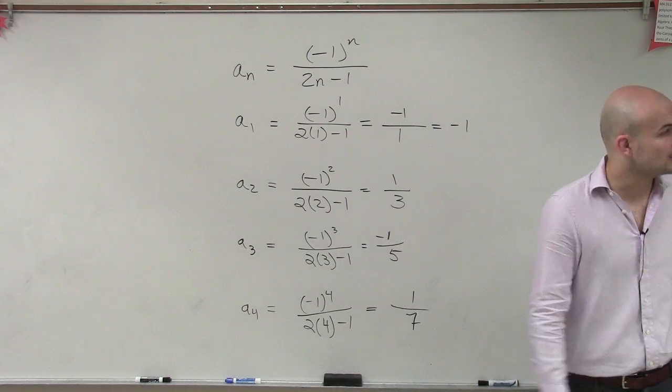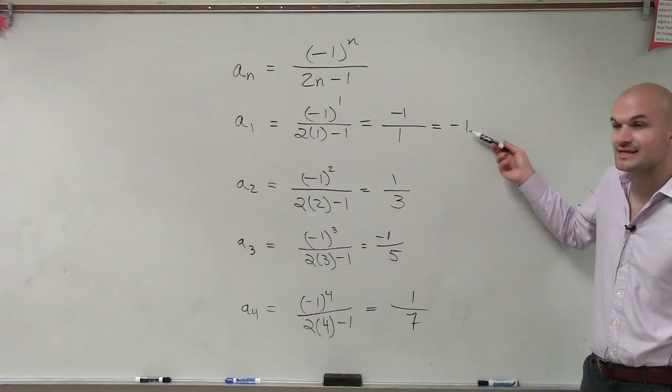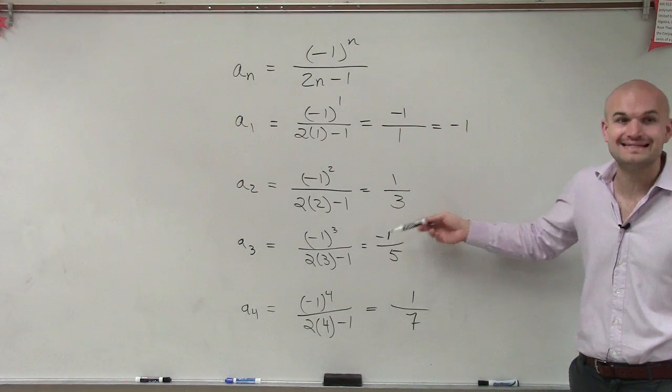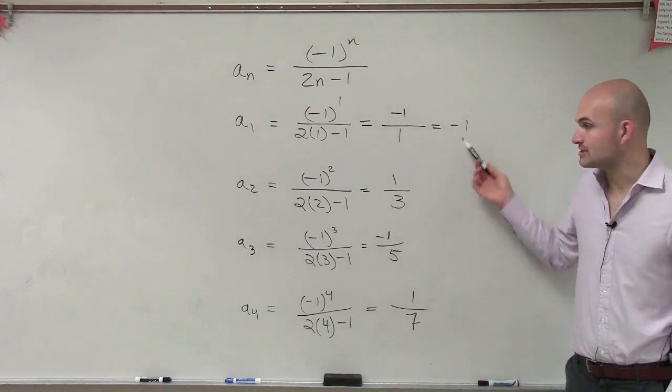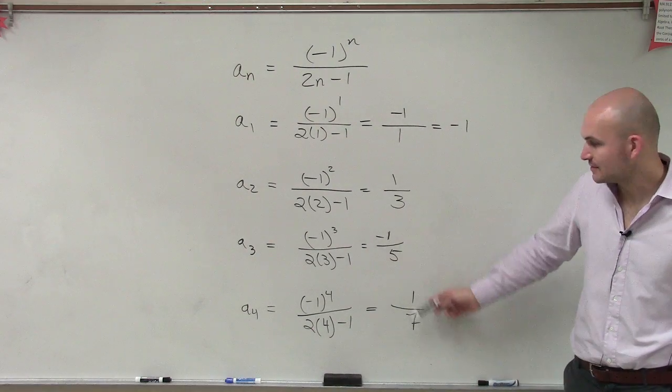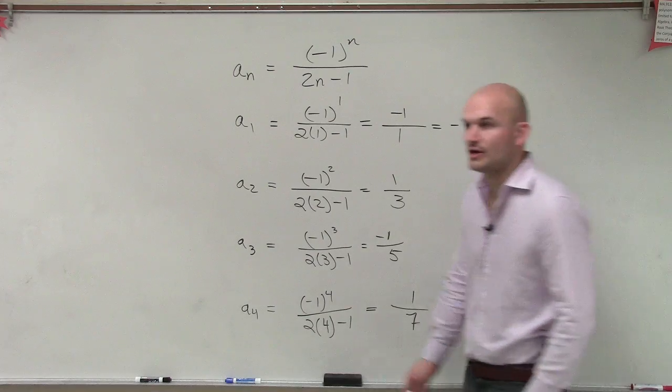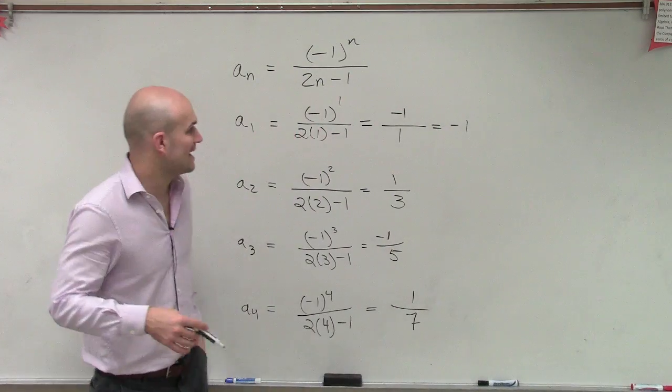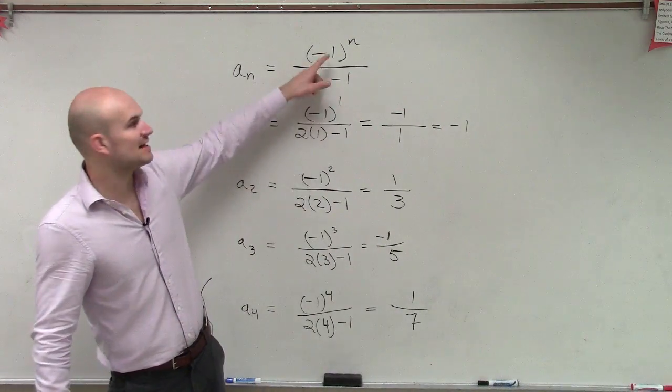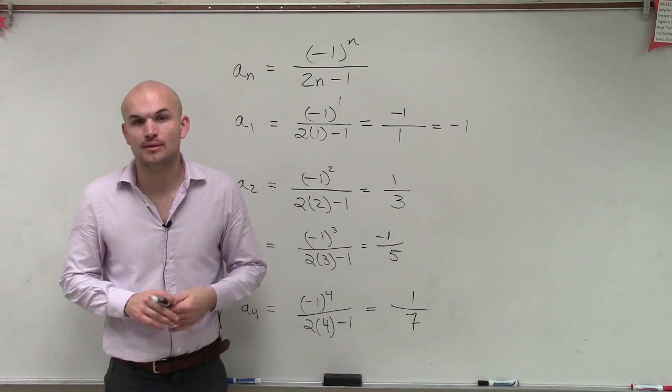So there you go. Now there's a couple things to notice about this. One thing is you guys notice that now, these have alternating signs, right? One's negative, one's positive. Negative to positive. So just another important thing to look at and understand how that's going to affect us just by looking at our formula.